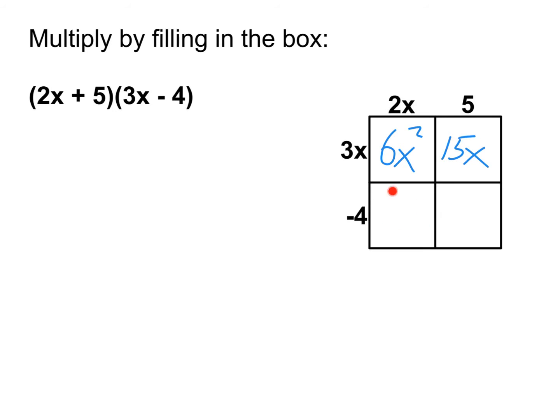Bottom left, this one's going to be 2x times negative 4, which gives us negative 8x. And then for our final square, this one's going to be 5 times negative 4, which is negative 20. Now this might seem somewhat familiar. There's a Punnett square method that uses a similar idea.